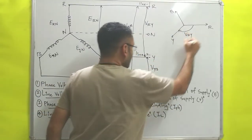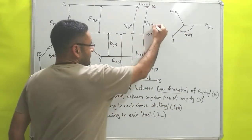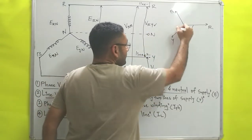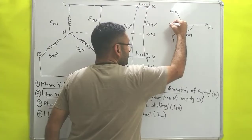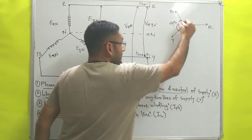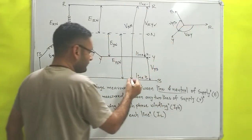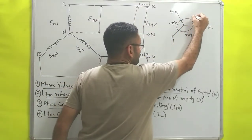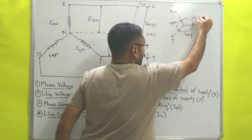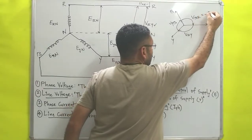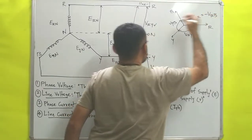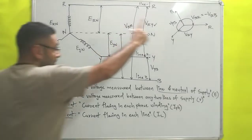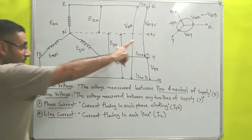You cannot write V-R-B for the last one. Why? Because from the phasor diagram we know the sequence is R, then Y, then B. The positive direction goes R to Y, giving V-R-Y; then Y to B, giving V-Y-B; then B to R, giving V-B-R — which equals minus V-R-B. We have to follow this order of positive direction.